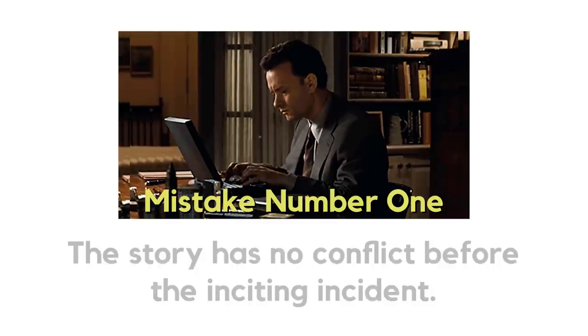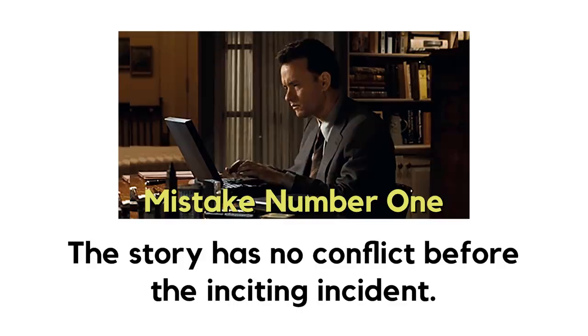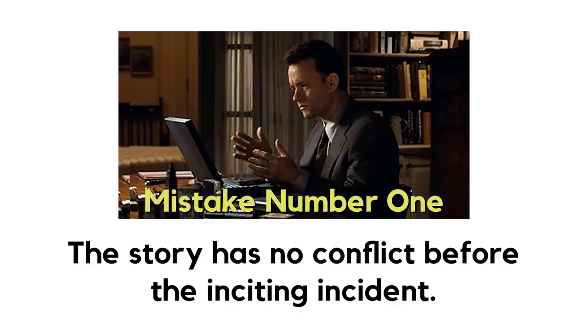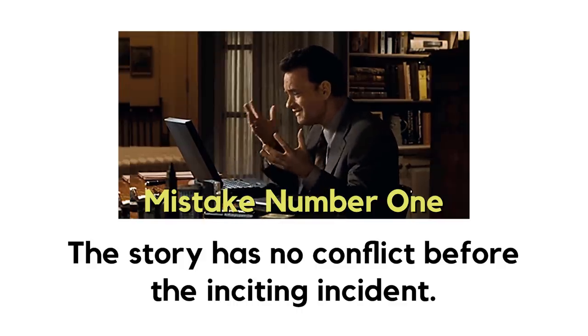Mistake number one: the story has no conflict before the inciting incident. Sometimes writers mistake the setup of their story to mean that this part should have no conflict. Sometimes they think that because the main force of antagonism hasn't entered the story, there should really not be any conflict — and this simply isn't true.